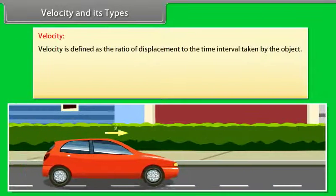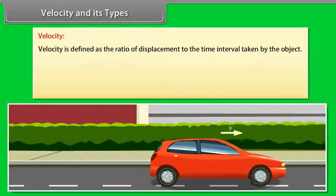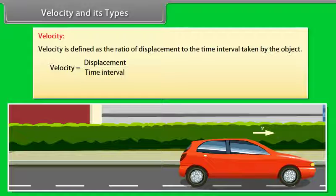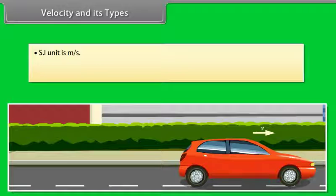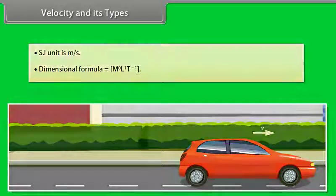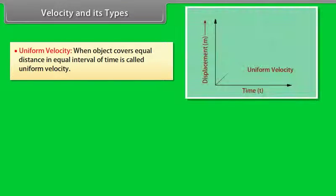Velocity and its types. Velocity is defined as the ratio of displacement to the time interval taken by the object. Therefore, velocity equals displacement divided by time interval. It is a vector quantity. Its SI unit is m/s, and its dimensional formula is M⁰L¹T⁻¹. Uniform velocity: when an object covers equal distances in equal intervals of time, it is called uniform velocity.